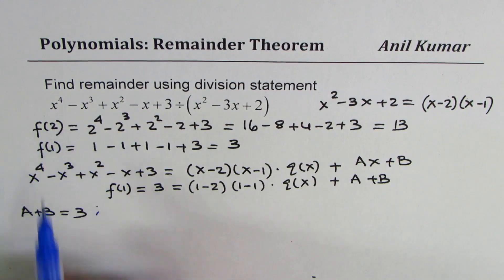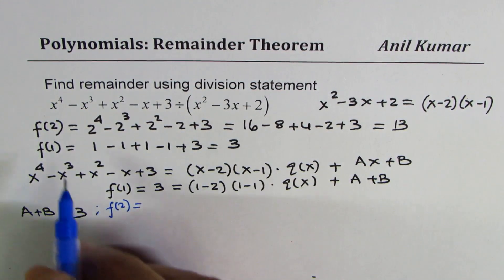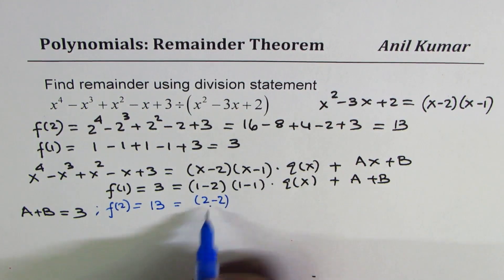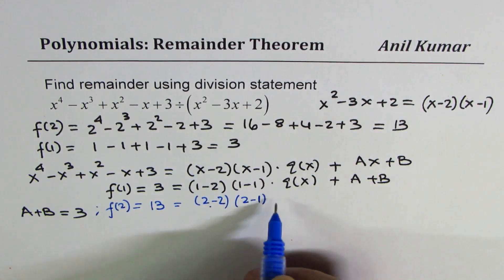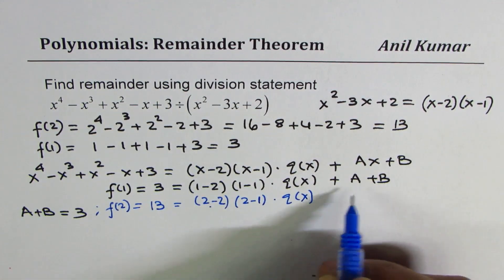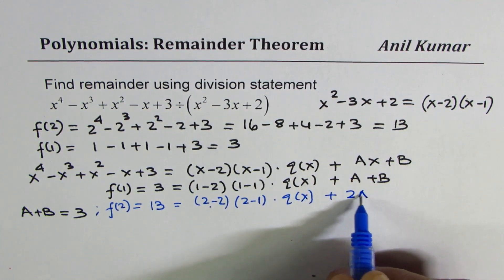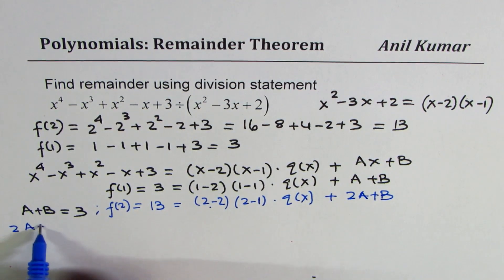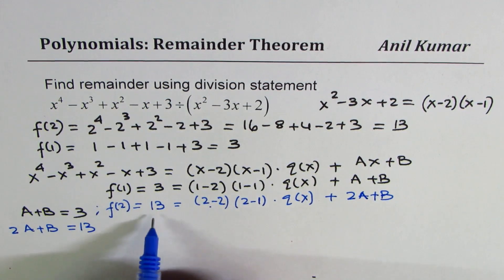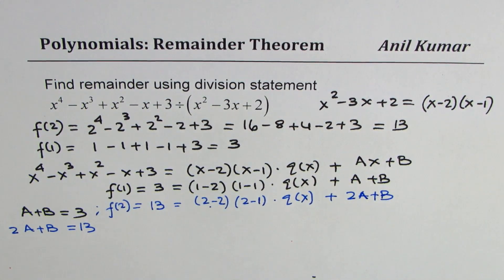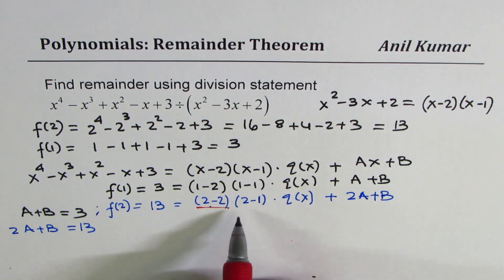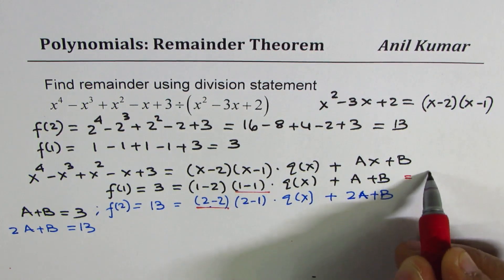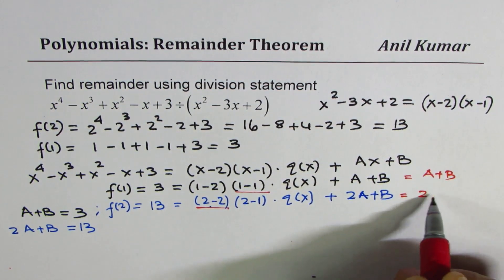If I substitute x equals 2, then f of 2 is 13. This term, x minus 2, becomes 0, so the whole divisor product becomes 0. When you substitute 2 into ax plus b, you get 2a plus b. So we get 2a plus b equals 13 as our second equation.